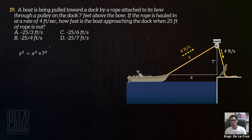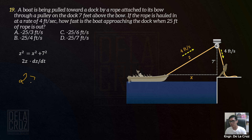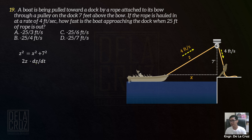Technique sa time rates: pag nagawa mo na yung equation, i-differentiate mo both sides of the equation with respect to time. So derivative of Z squared with respect to time — that is 2Z dZ over dT. Bakit merong dZ over dT siya? Kasi hindi with respect to Z yung pagderivative natin — pag ginawa natin with respect to time, that will not cancel, dZ over dT tayo. Then derivative of X squared with respect to T pa rin — so that is 2X dX over dT. Derivative of constant is 0.